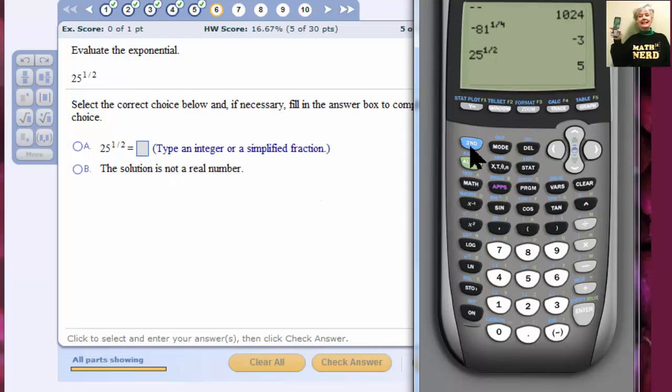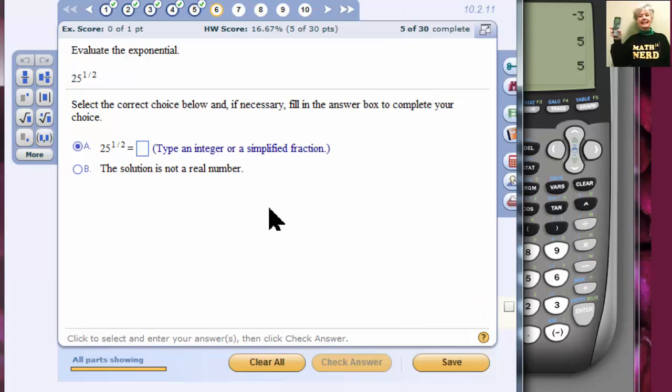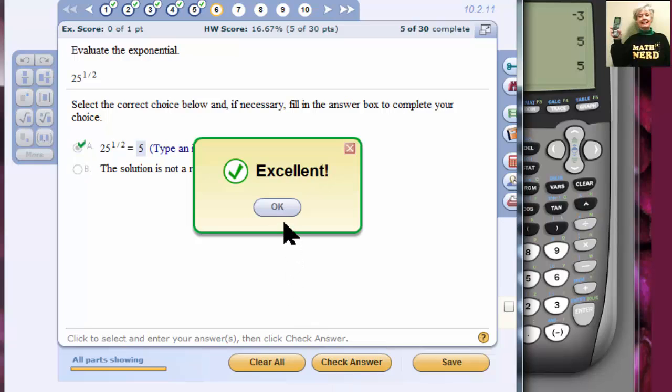Also, let's do the whole story. 2nd x square, that gives me the square root of 25. I hit the right arrow key. I hit the right arrow key. I'm done. So, the answer is 5. Check my answer. I'm correct.